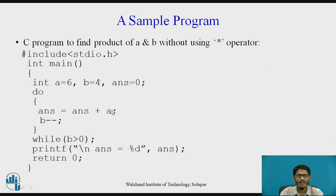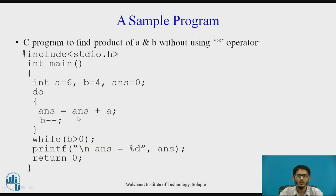The value of A is added to ans every iteration, and B is decremented by 1 each time. Since B equals 4, the value A=6 is added to ans four times: 6+6+6+6 added to the initial ans of 0 yields 24. That answer is displayed using the printf statement — ans = %d — where %d is replaced by the value 24. Adding 6 to itself 4 times gives the product of 6 and 4 without using the multiplication operator. The program concludes with a return statement and the closing curly brace of main.